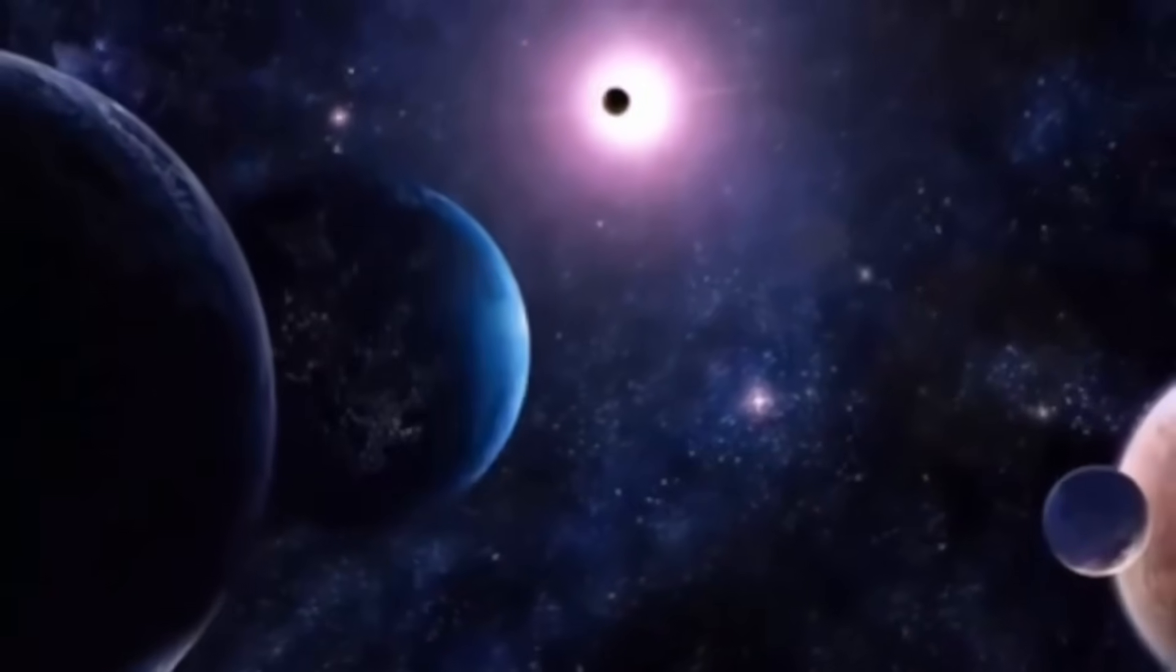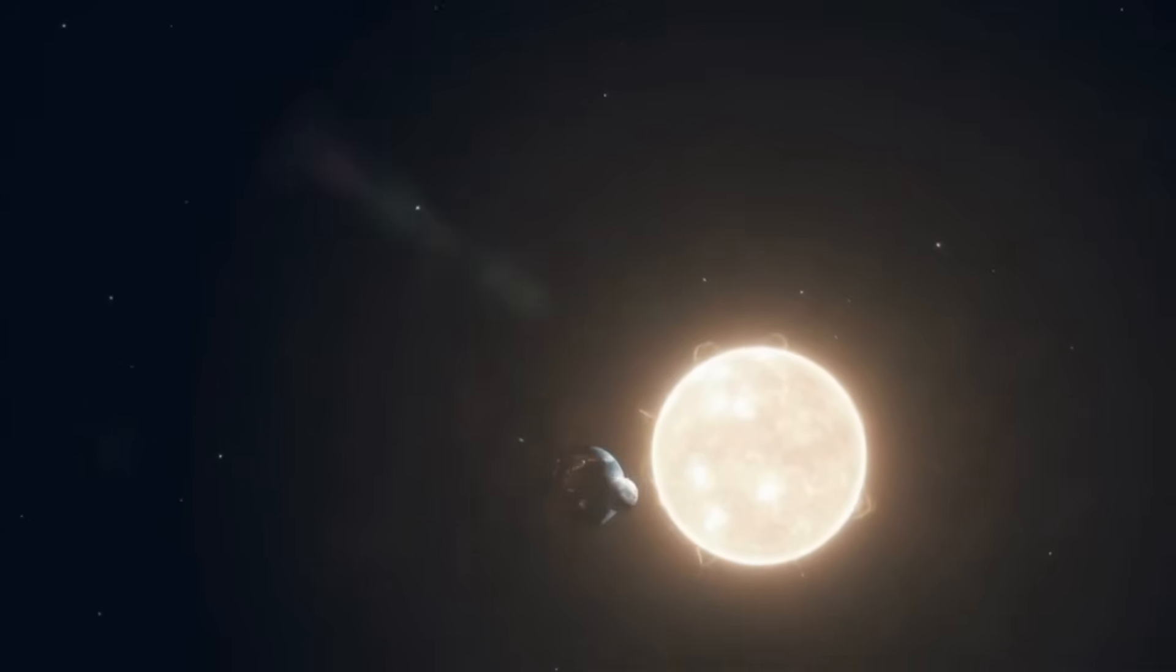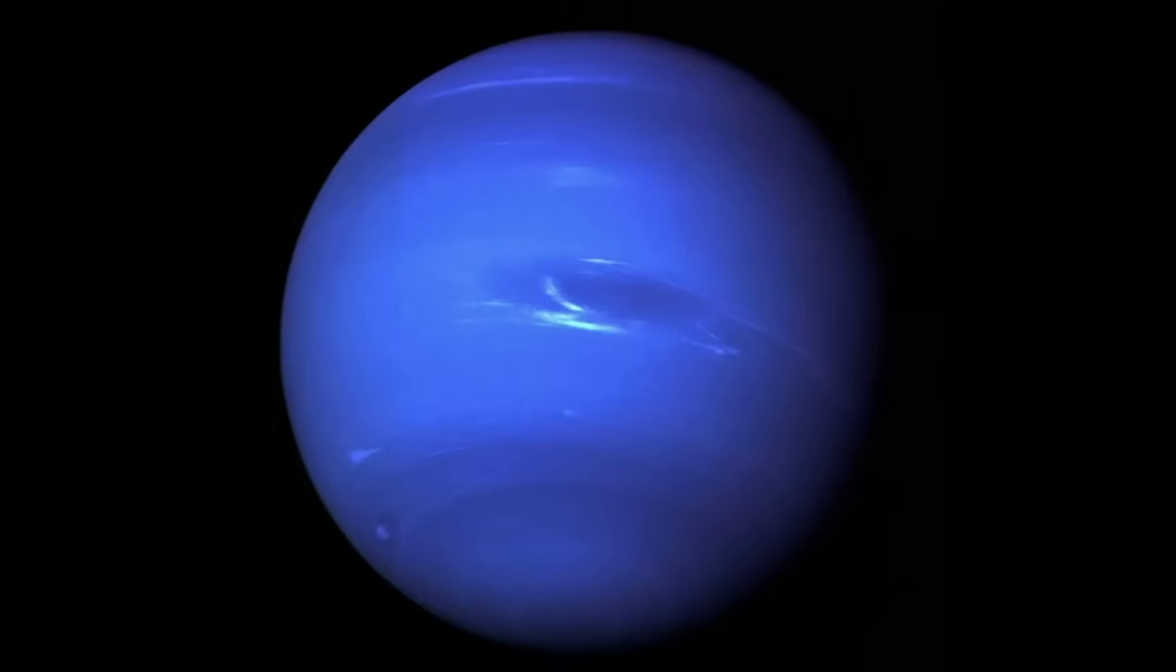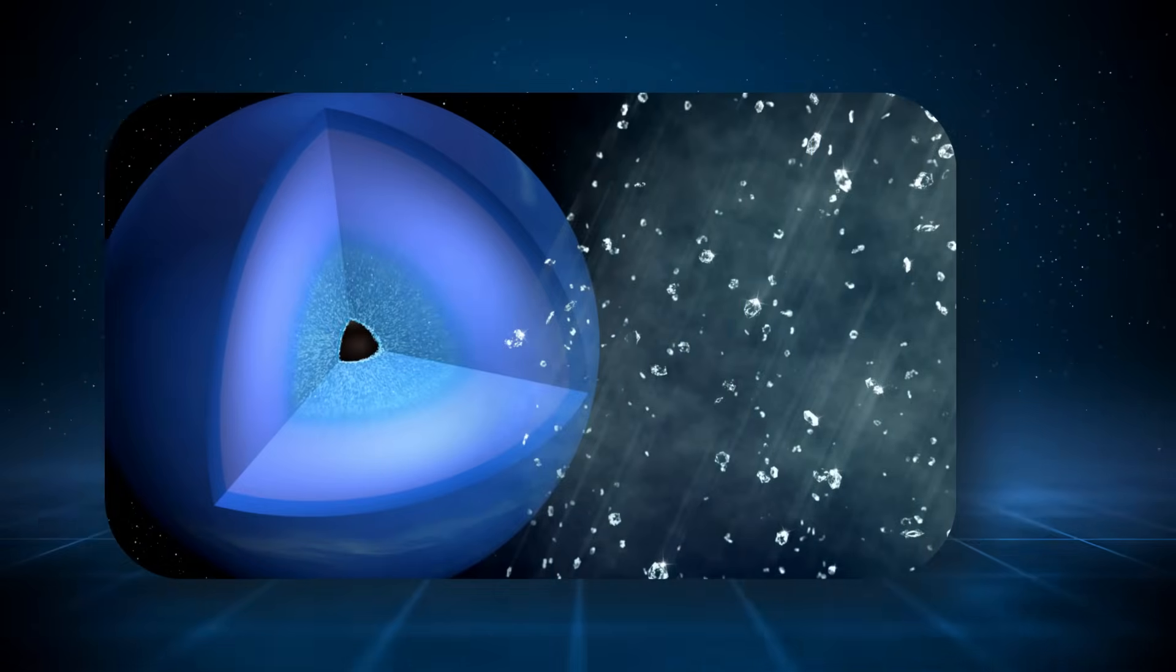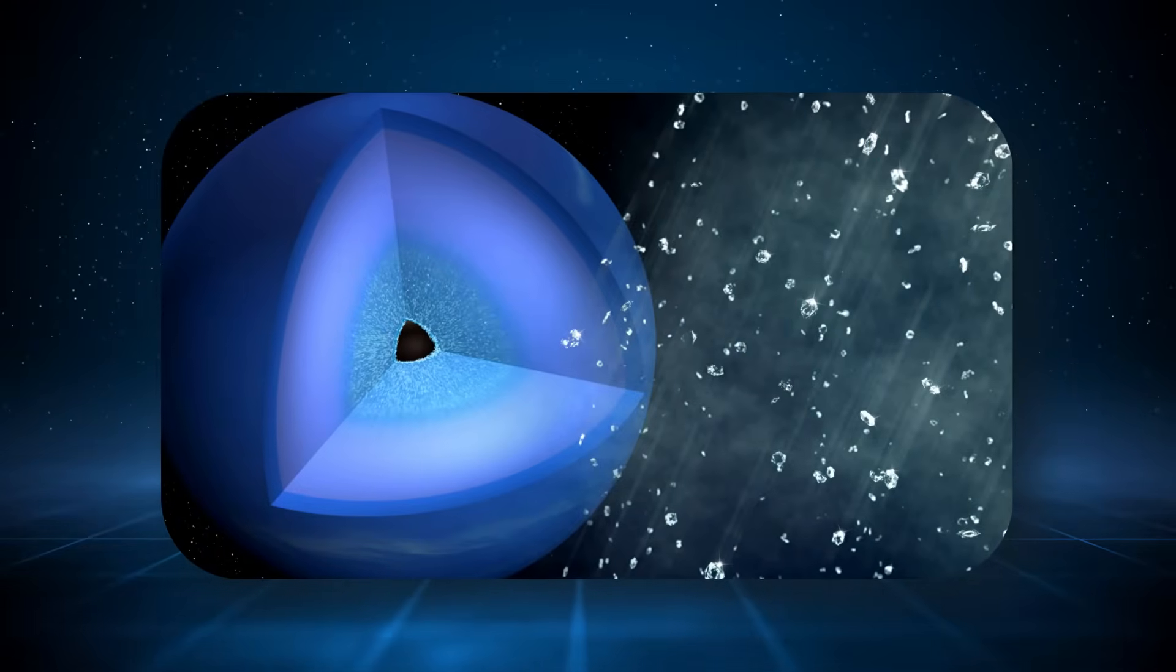This revelation carries vast implications. If Neptune's atmosphere is being driven by internal periodic bursts of energy rather than steady-state radiation from the core, it reshapes how scientists think about heat transport and atmospheric chemistry on outer planets. It also raises questions about the stability and lifespan of such systems.